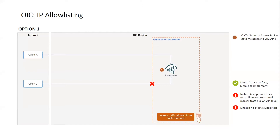Let's start with the simplest option, which is to just use OIC's network access policy. For those who don't know, when you provision an OIC instance you can actually define an access policy for that instance from the OCI console, which will limit the IP addresses that can access your OIC instance. All you need to do is specify the IPs that can access OIC — it's very simple.